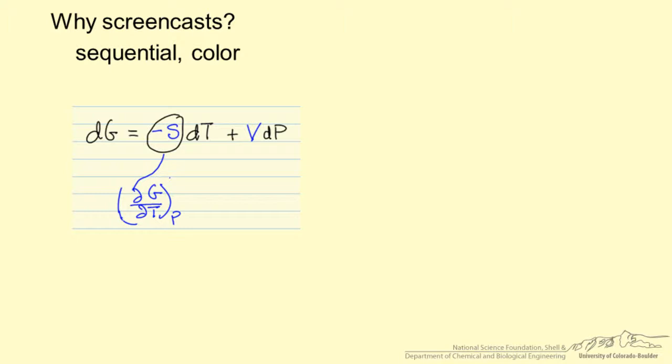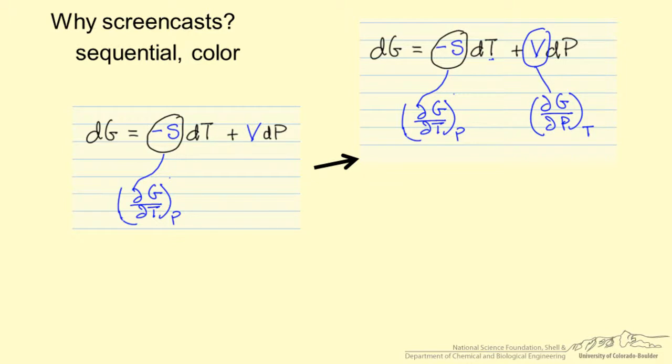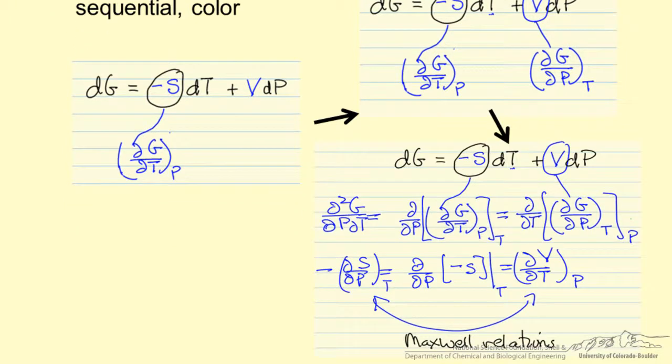So why screencasts? Well certainly some of the advantages over a textbook is that you can use color, but you can also introduce things sequentially that's more difficult to do in a textbook. For example, an equation in thermodynamics where we can indicate what this term is equal to.